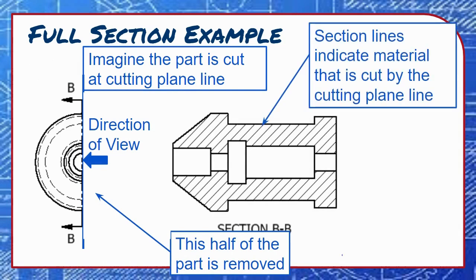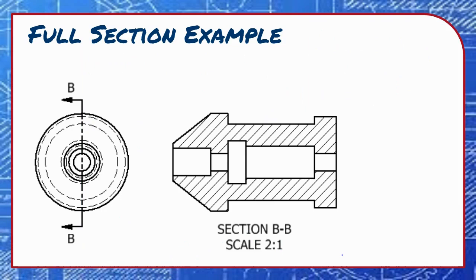The hatched areas use lines called section lines to indicate where solid material was cut to create the view. The areas without section lines were hollow and do not show section lines. Normal object lines representing edges still appear, but hidden lines representing invisible edges do not.